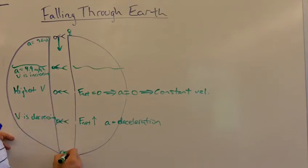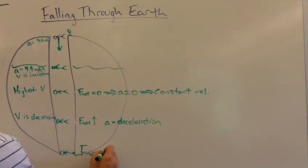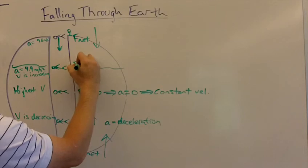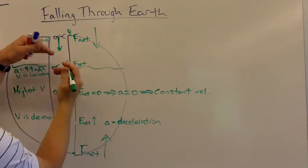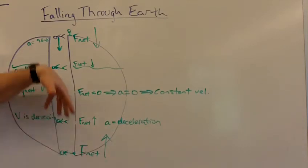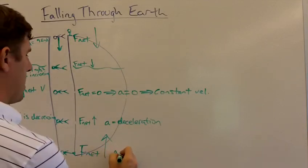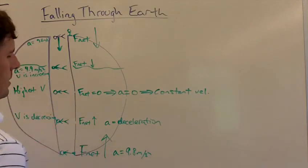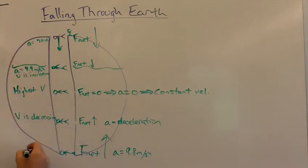And then finally you reach down here, and the net force on you is very strong in the upward direction because all of Earth's gravity is pulling you up, whereas up here all of Earth's gravity was pulling you down, and here there was conflicting gravitational forces so your net force was small. Here you are all the way at the bottom. All of Earth's gravity is pulling you up. Your acceleration is now 9.8 again, but this time pulling you back toward the center of the Earth. Your velocity right at that point when you reach here is going to be zero.